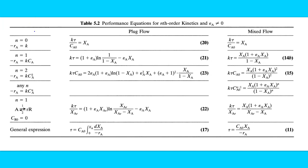The performance equation for nth order kinetics covers n=0, n=1, and n=2. For any nth order reaction, the rate equation is: minus rA = K · CA^n. For zero-order reaction, minus rA = K, and the performance equation is K·τ / CA0 = XA. This applies for both a plug flow reactor and a mixed flow reactor for zero-order reaction.